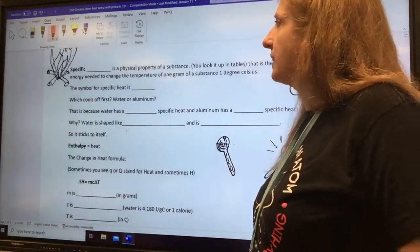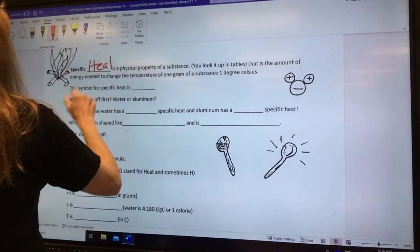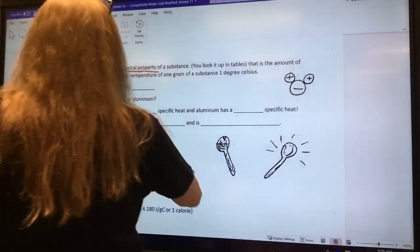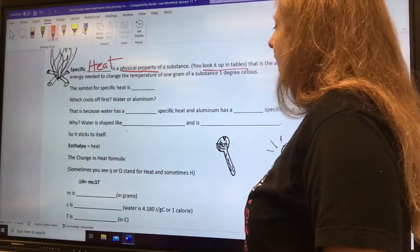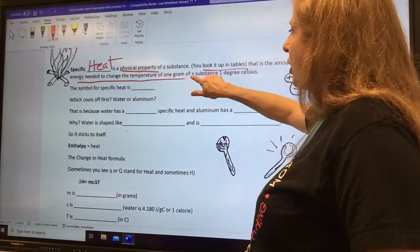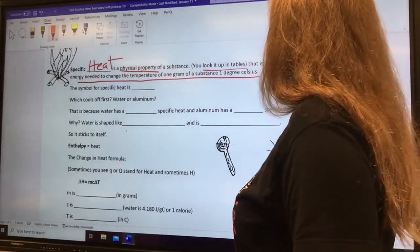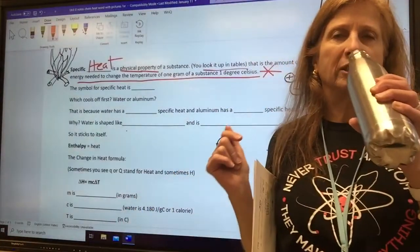Now, the next thing is specific heat. Specific heat is a physical property of a substance. You can look it up in tables. It's the amount of energy needed to change the temperature of one gram of substance one degree Celsius. You need to memorize that definition. It's an important little chemistry definition to know what specific heat is.